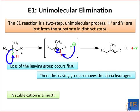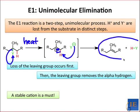The absence of strong base means that E1 reactions usually need another kind of driving force. This is most commonly provided in the form of heat, which encourages the breakdown of the substrate into two molecules: the alkene product and the acid of the leaving group, HY.